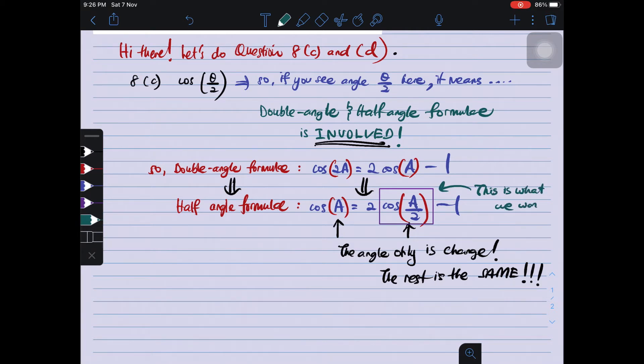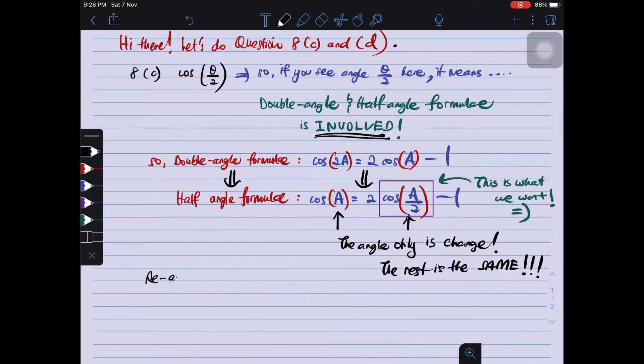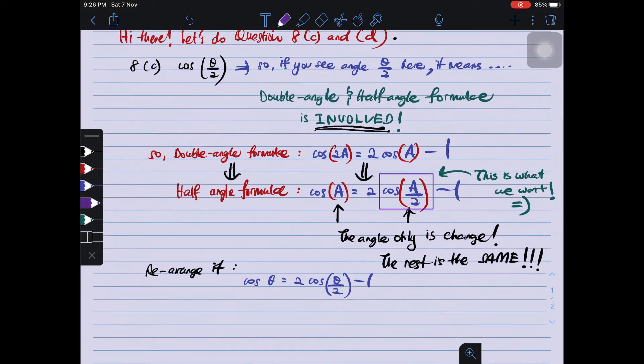So this is what we want. From question 8C, we want cos θ/2. So that's why in this half angle formula, ada cos A/2. Jadi, kita rearrange sahaja. And we will get cos θ equals to 2 cos² θ/2 minus 1. Oops, alamak. I forgot the square. There we go. Baru saya sedar. Ada square there. So it is actually 2 cos² θ/2 minus 1. Sorry.